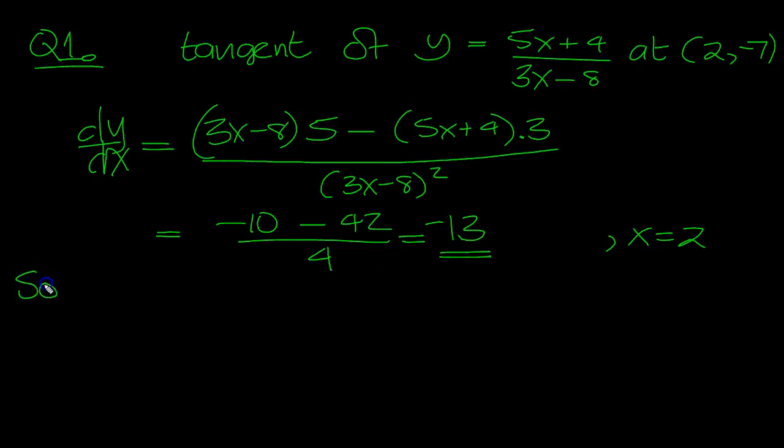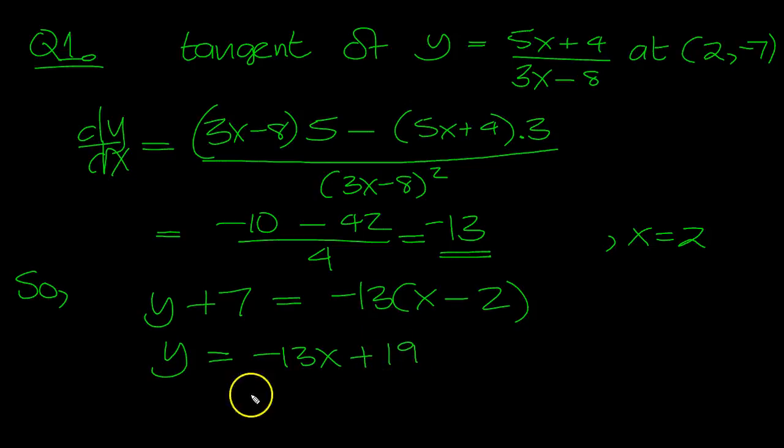So the tangent then, that's the gradient at that point. So y minus minus 7 is equal to the gradient times x minus 2. So y equals minus 13x plus 26 minus 7 is plus 19. That's the tangent.